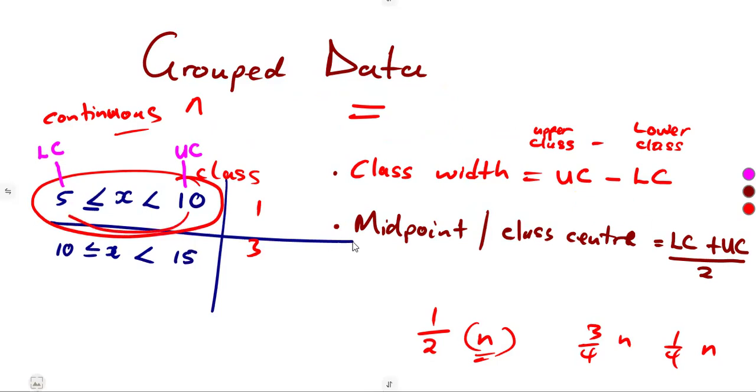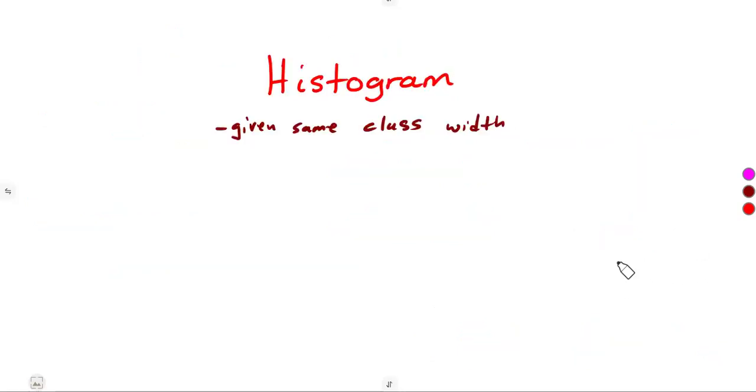So you are going to notice 10 minus 5, you get 5. 15 minus 10, you get 5. From one point to another, it will be the same throughout. In that case, the histogram that you are going to be having is going to be represented from those classes that you are given versus the frequencies.